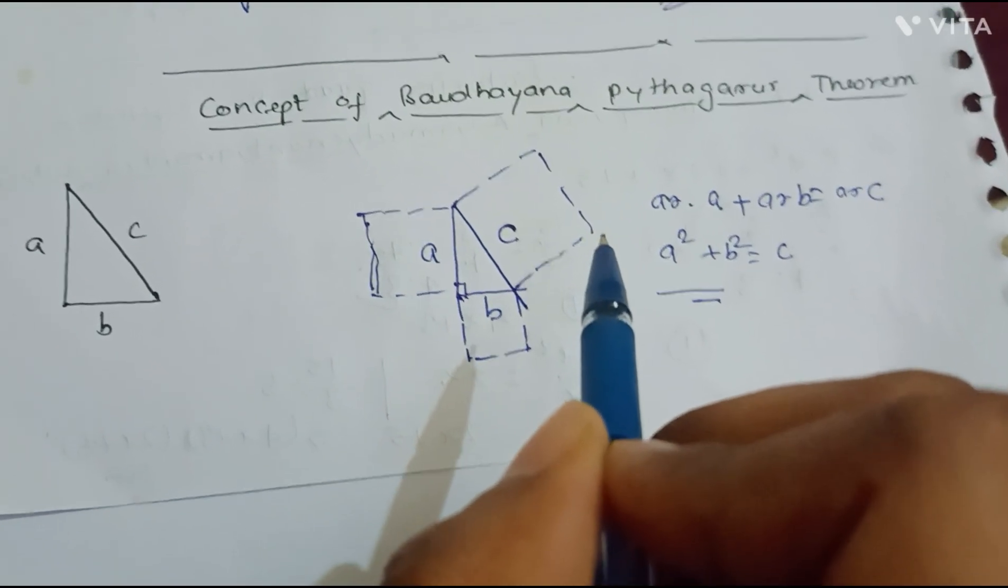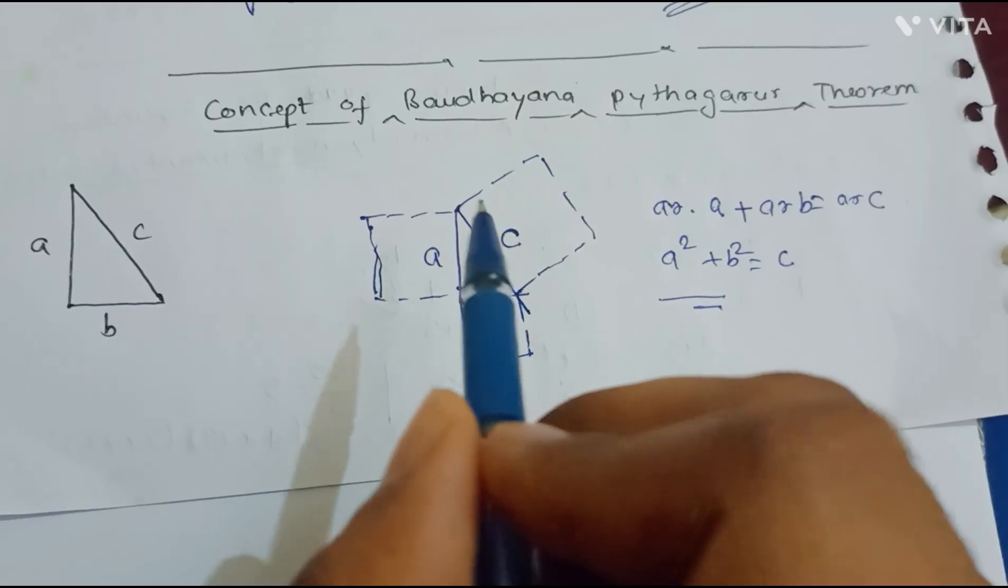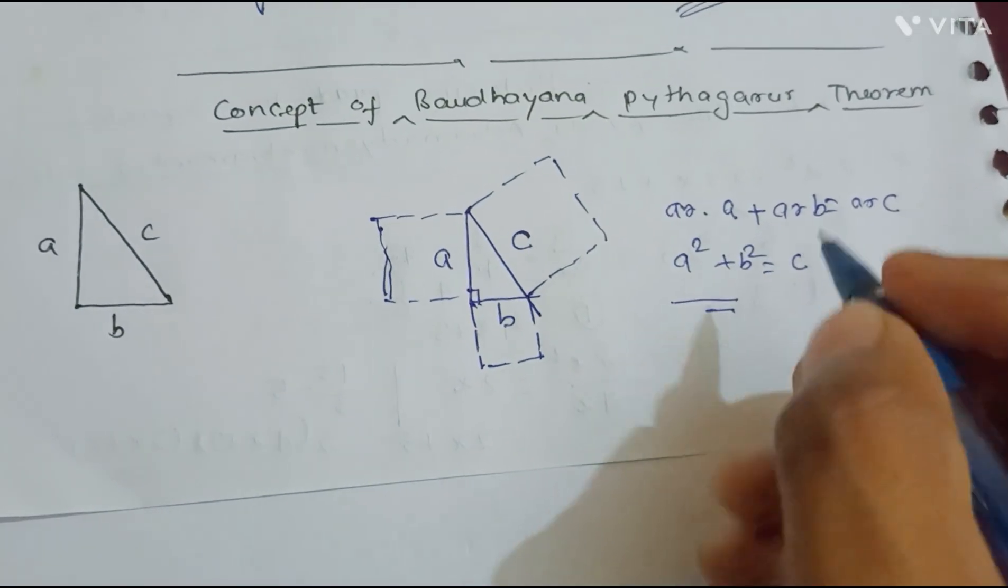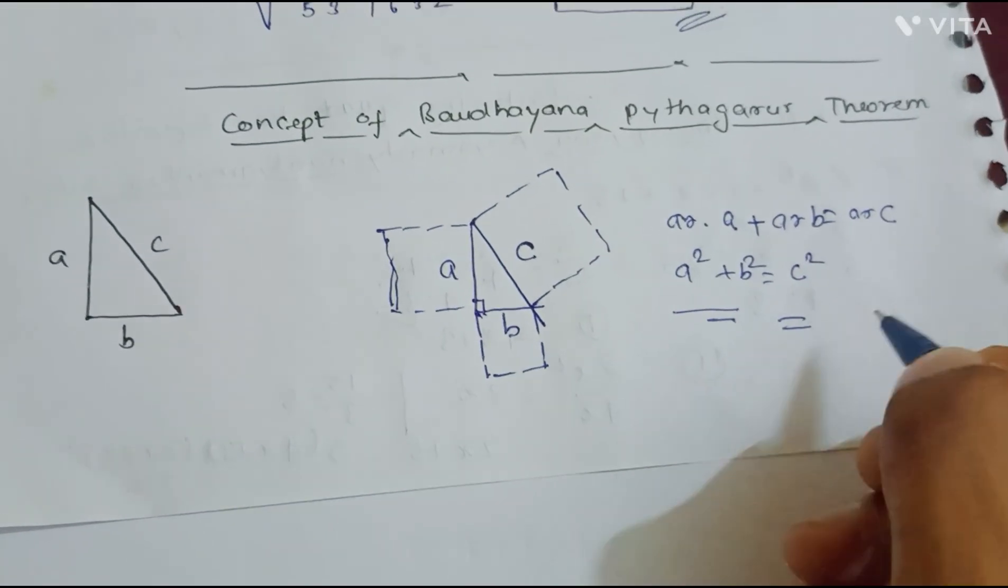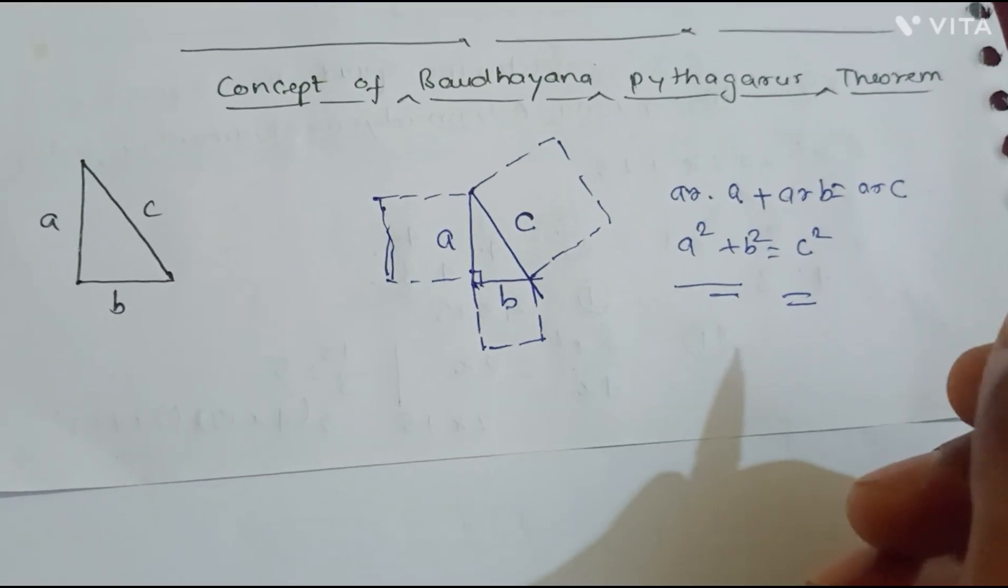So hence, a squared plus b squared equals to c squared will be proven. Thank you. If you like the video, then please subscribe the channel and share with your friends. See you soon, thank you.